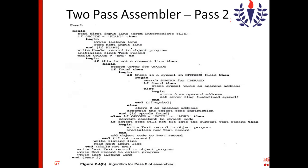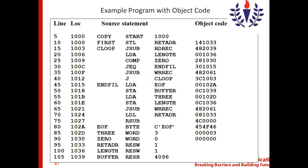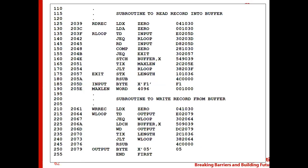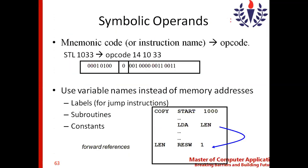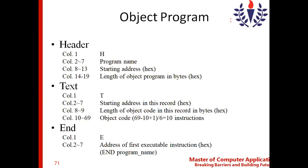This is how the assembler generates the object program from the source program. The whole process is about how the assembler converts a source program into an object program in two passes — pass one and pass two — each described by its own algorithm. Let us see how the object program looks once the source program is given to the assembler.